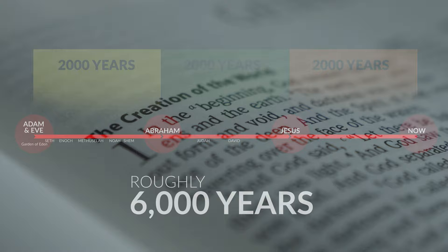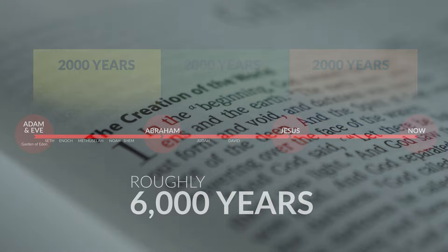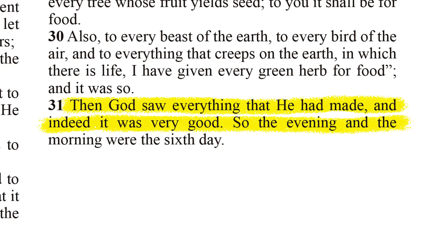The Genesis record provides for us the culmination of the cosmic creation period. So God created man in His own image. In the image of God, He created him male and female. He created them. Then God saw everything that He had made, and indeed it was very good. So the evening and the morning were the sixth day.